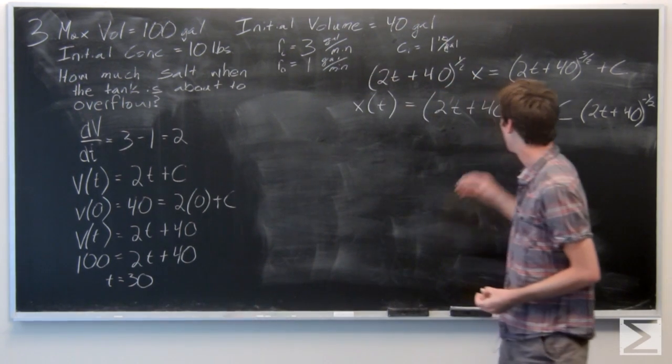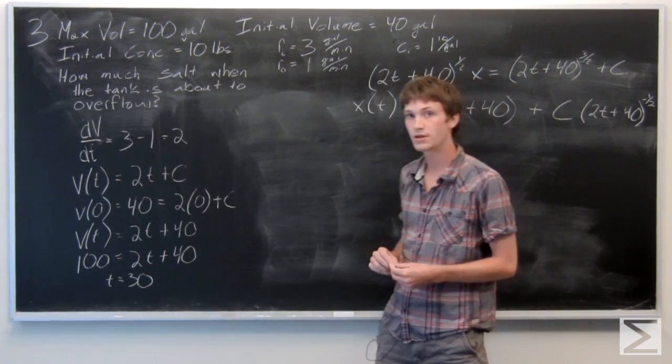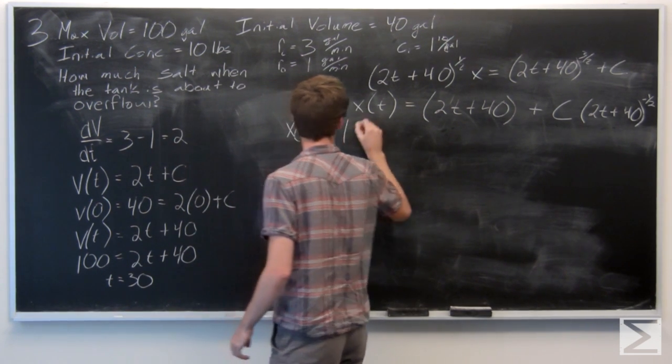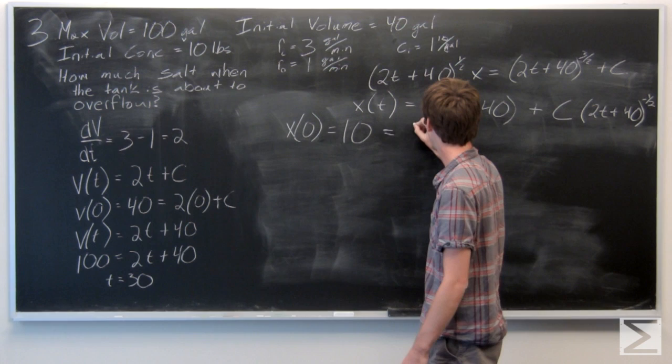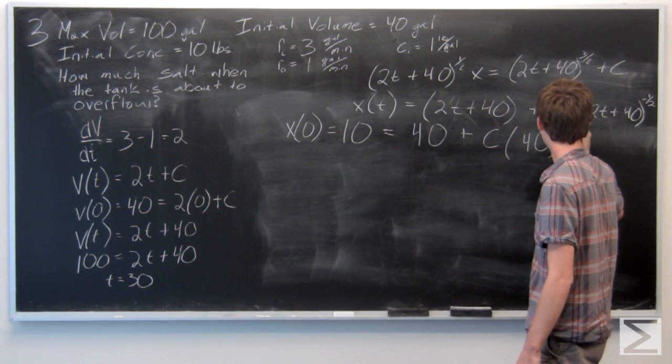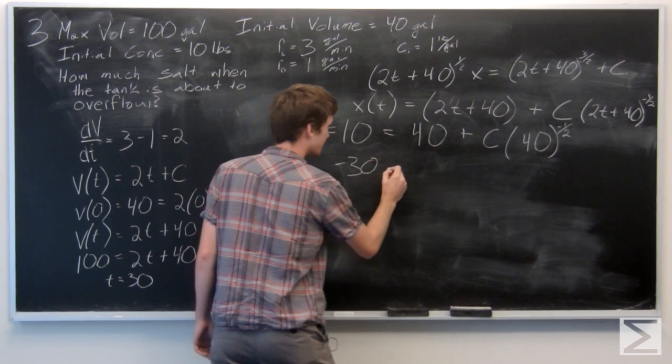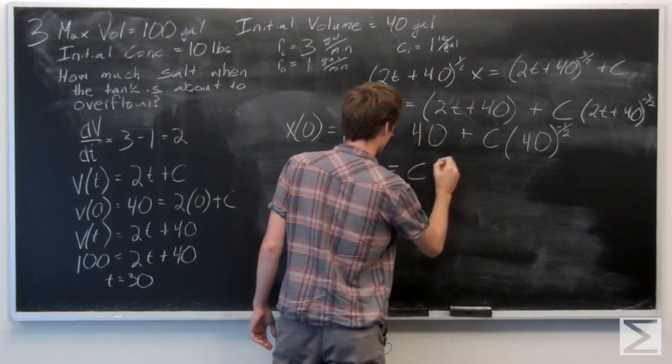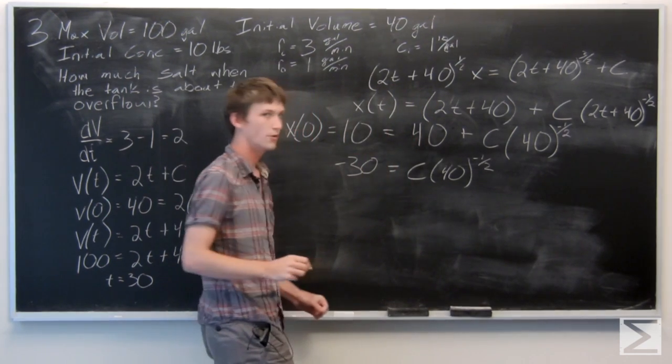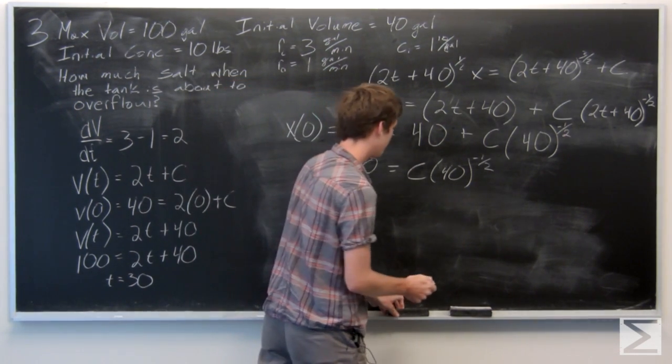Now, we need to solve for the constant c, so we're going to use our initial concentration of 10. So at time 0, we need to know that x of t should equal 10. And we're going to solve for c. And we find that c is equal to negative 30 times the square root of 40. Just rewrite it here.